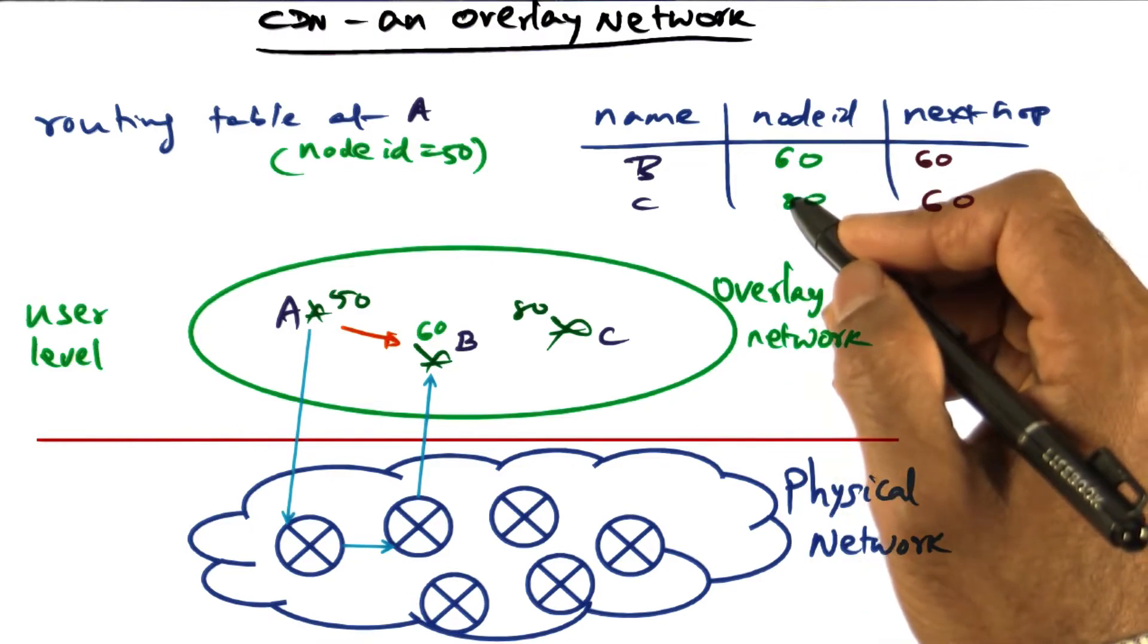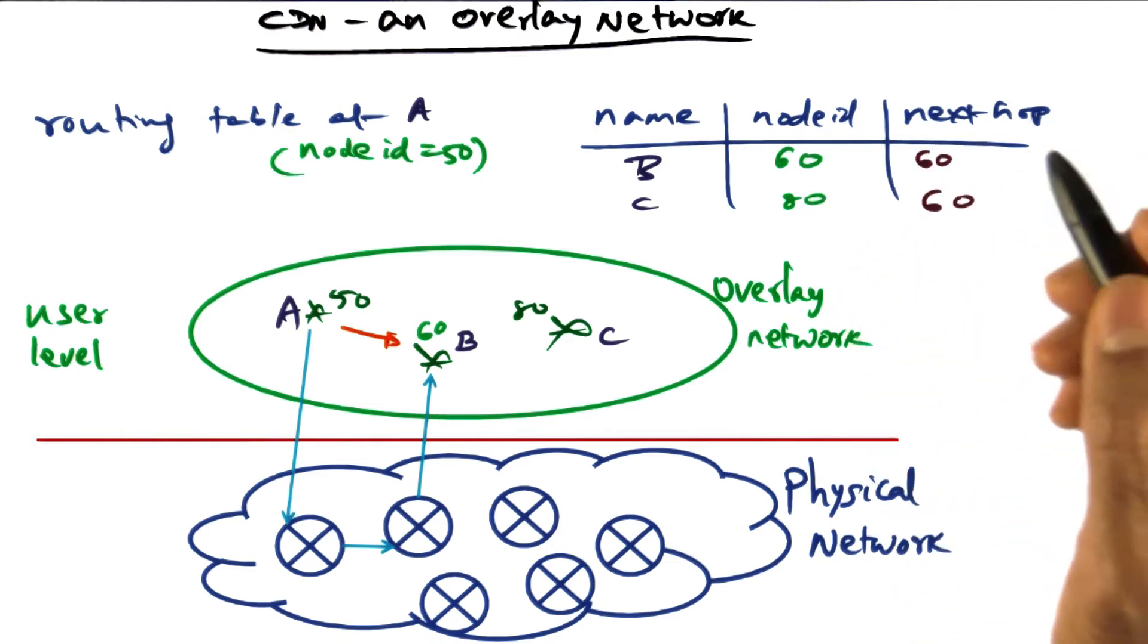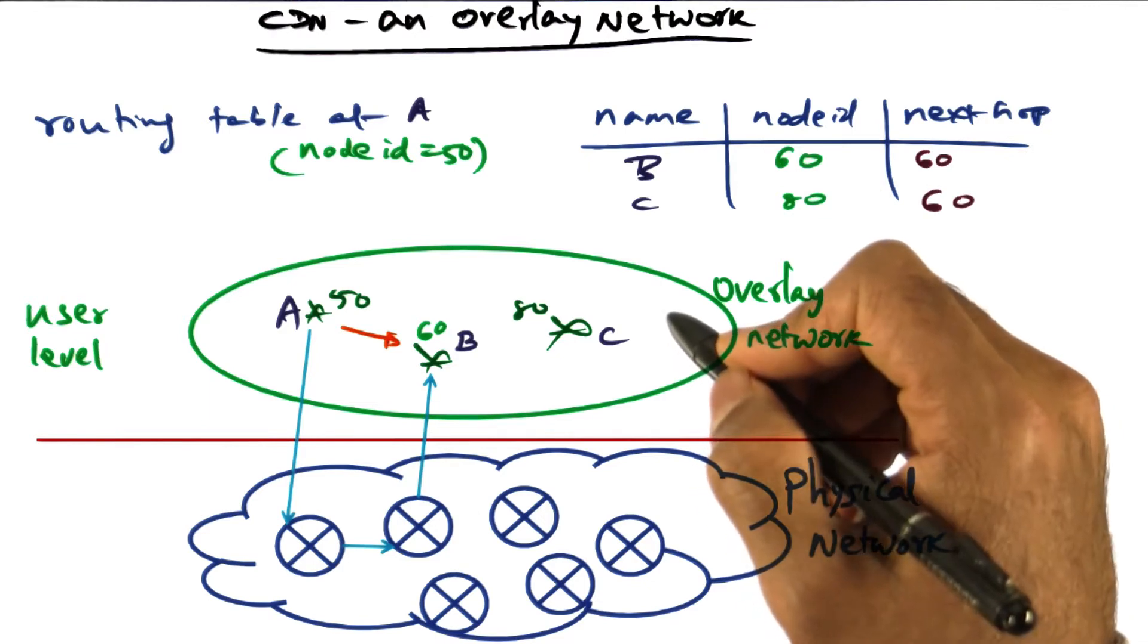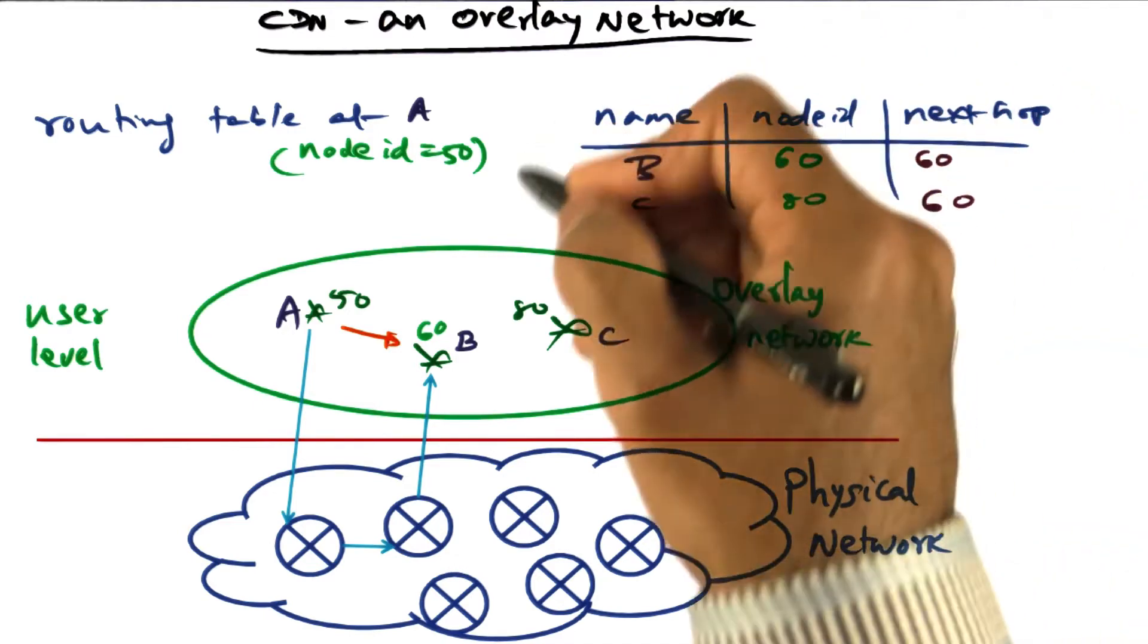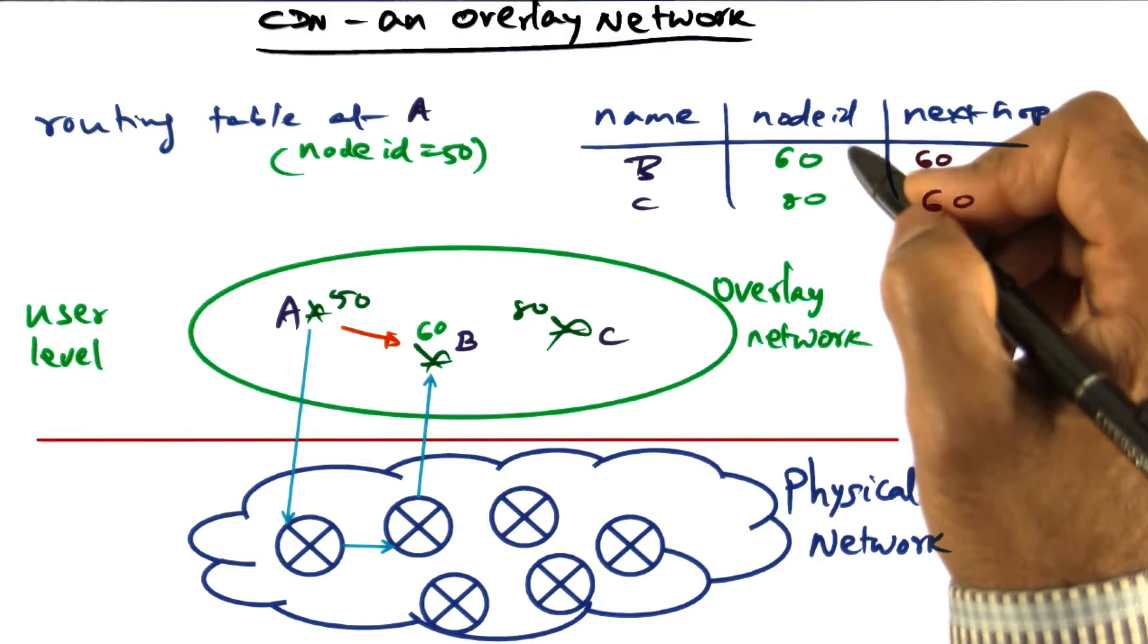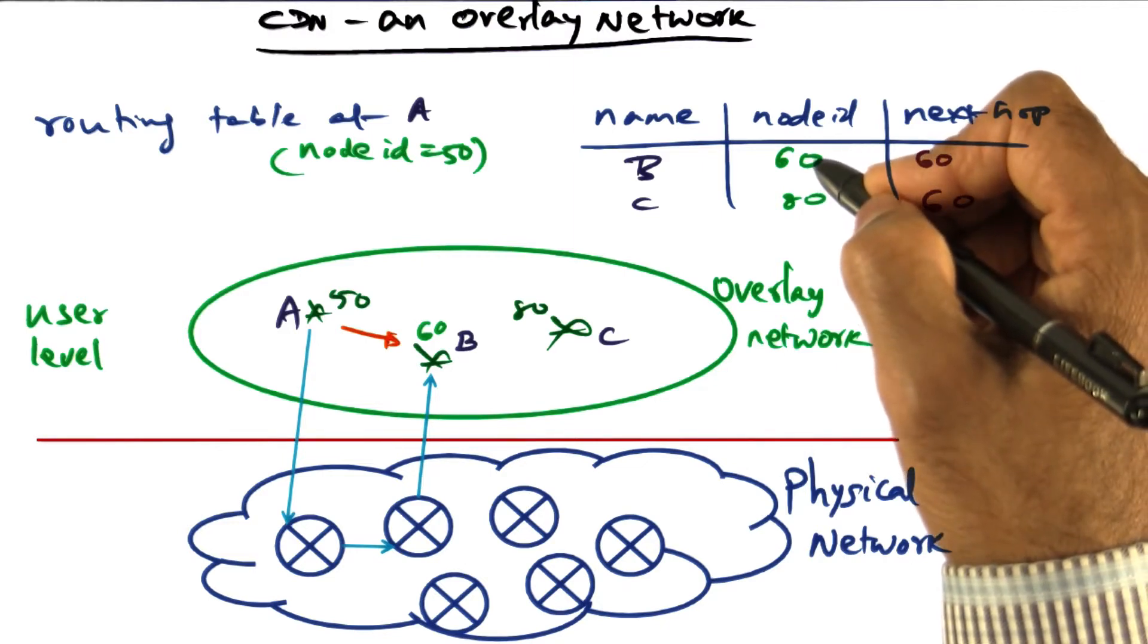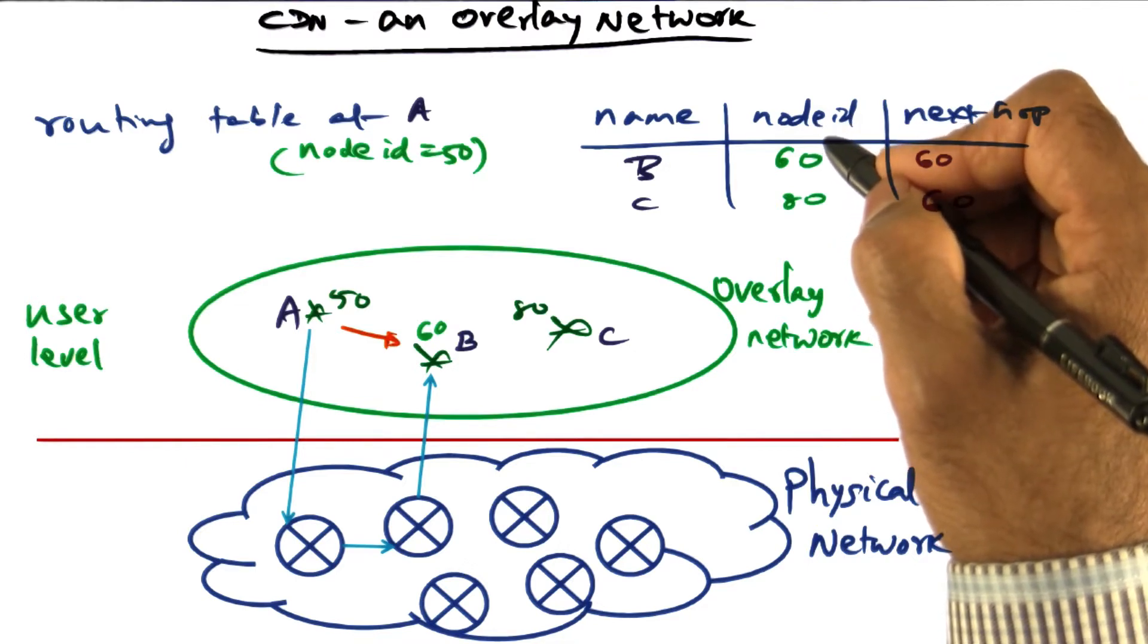For example, if you, using that SHA1 hash, found that your IP address maps to node ID 60, you'll say, 'Kishore, my node ID is 60 and my IP address is such and so.' That's how I construct a user-level routing table. All I know is your node ID, and that node ID maps to some IP address. I can use this correspondence between the node ID and the IP address to send information to you.